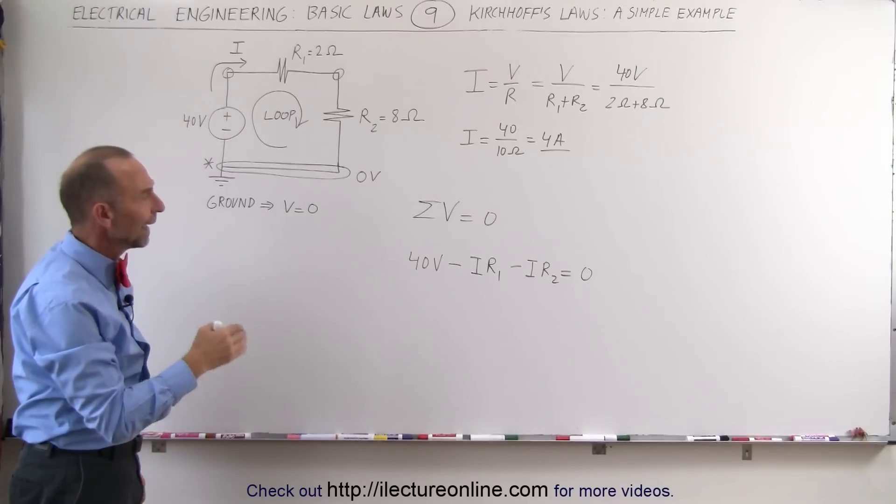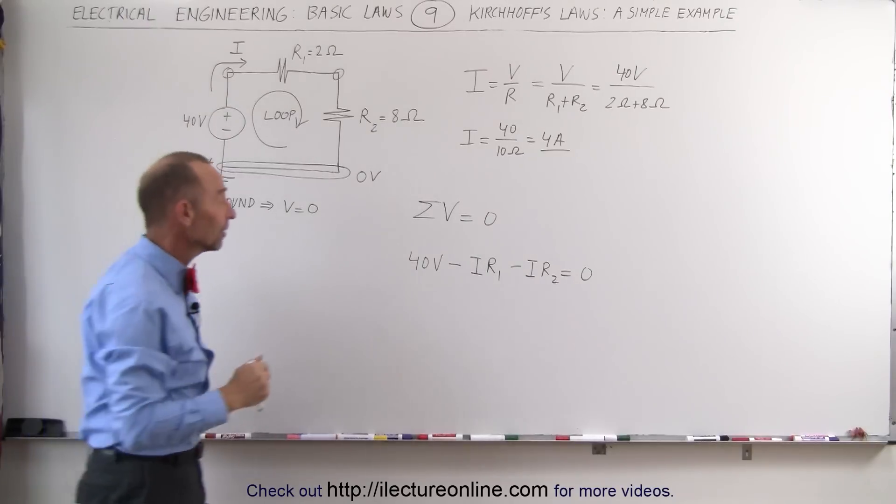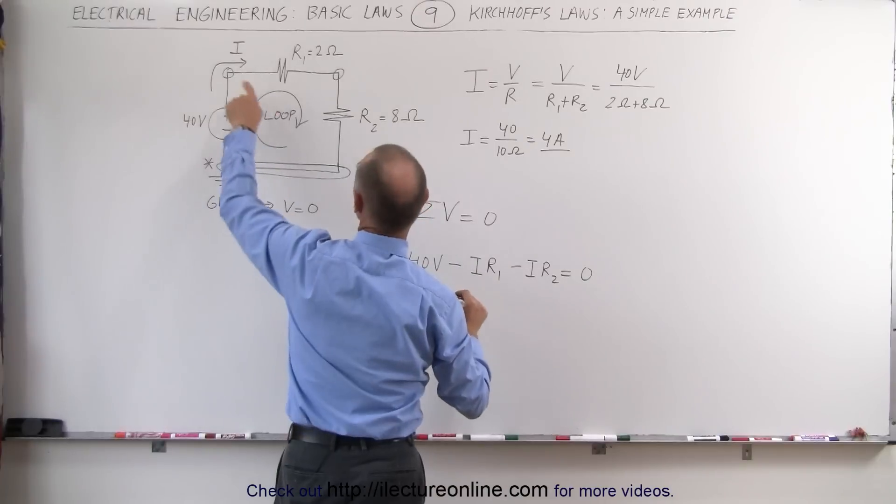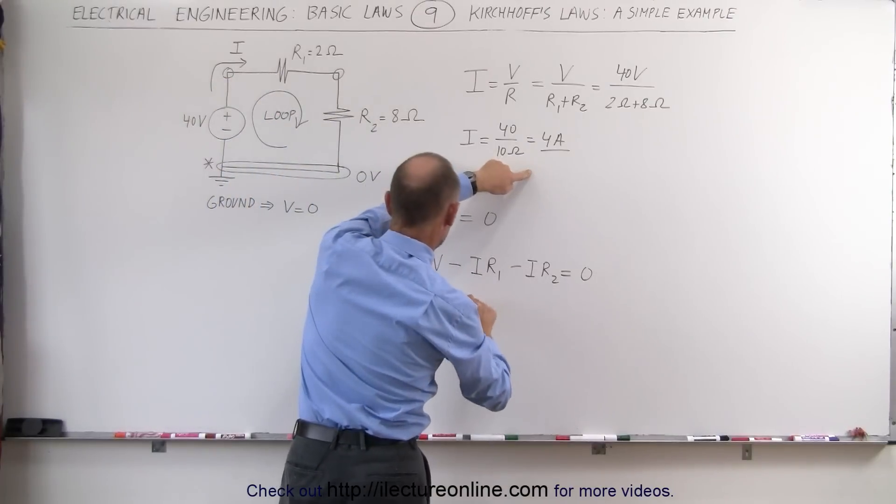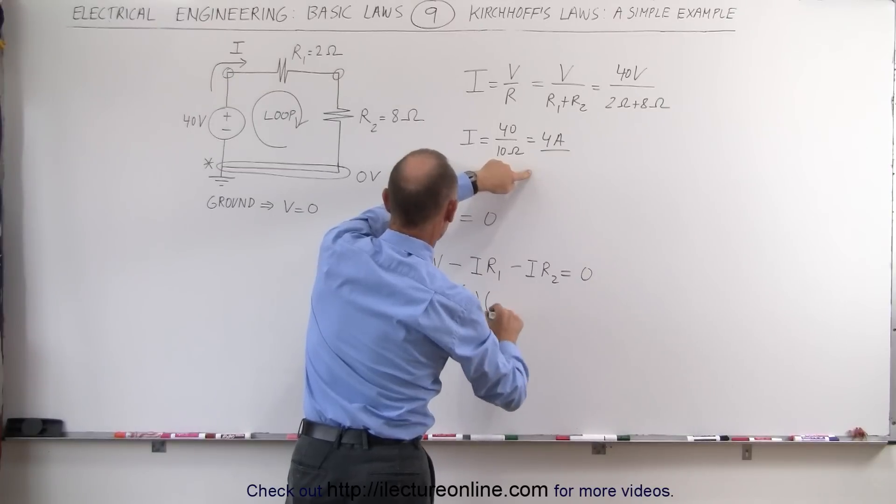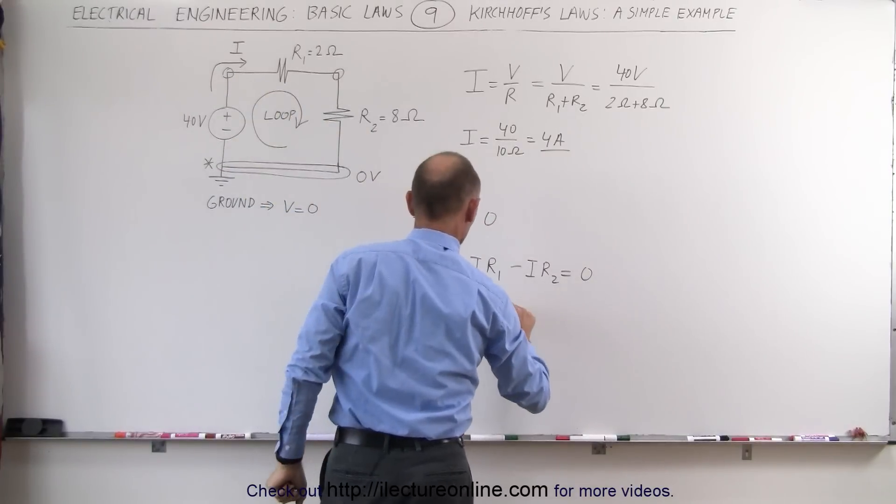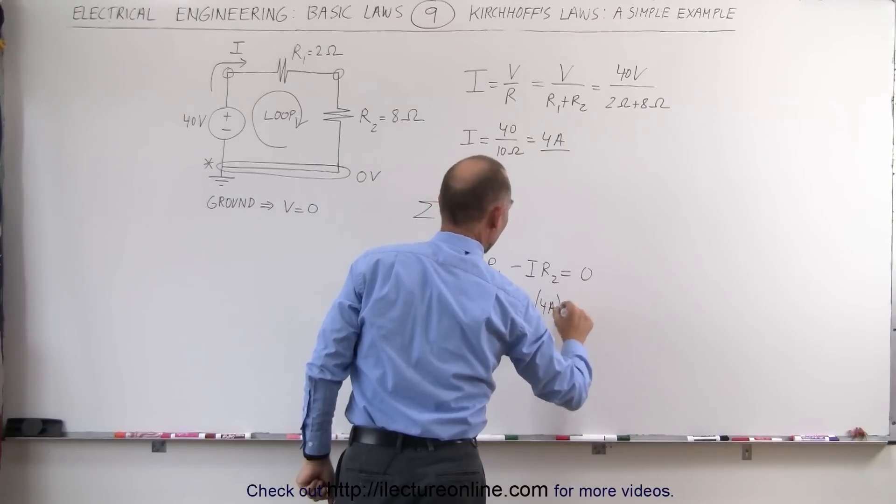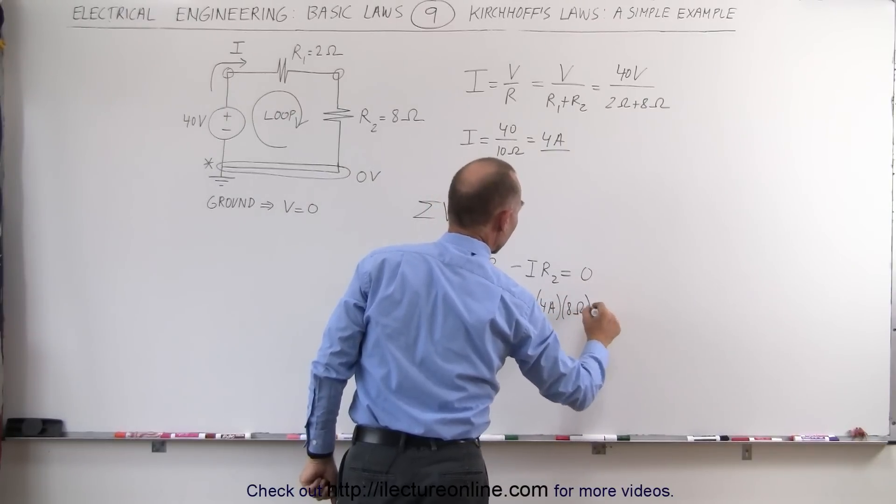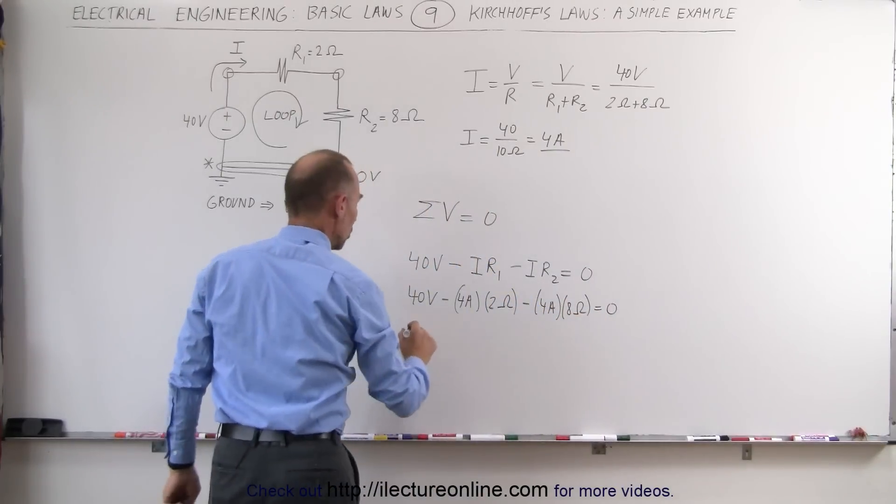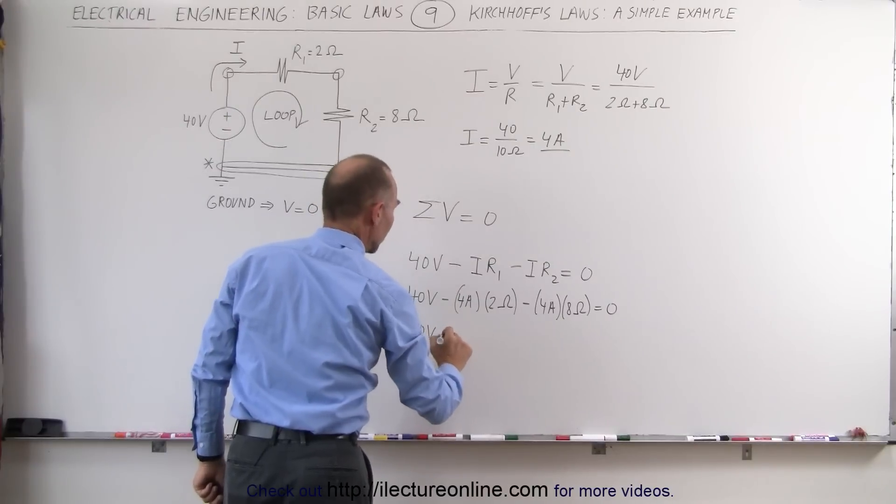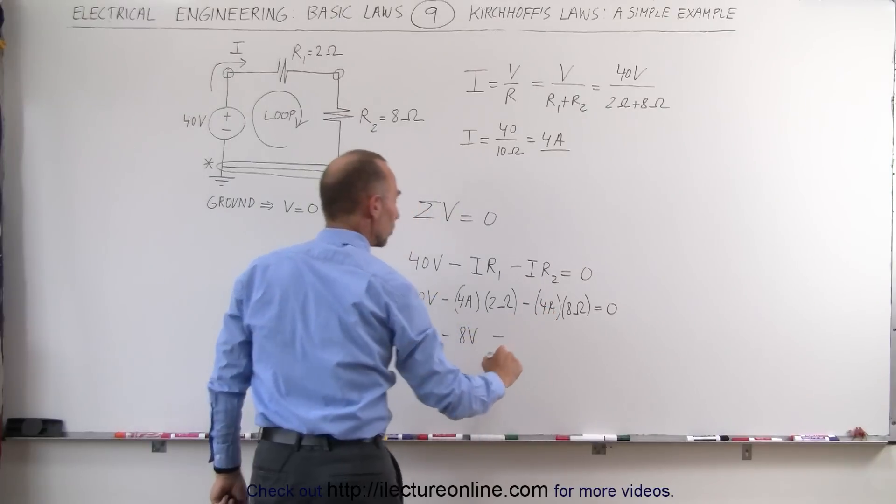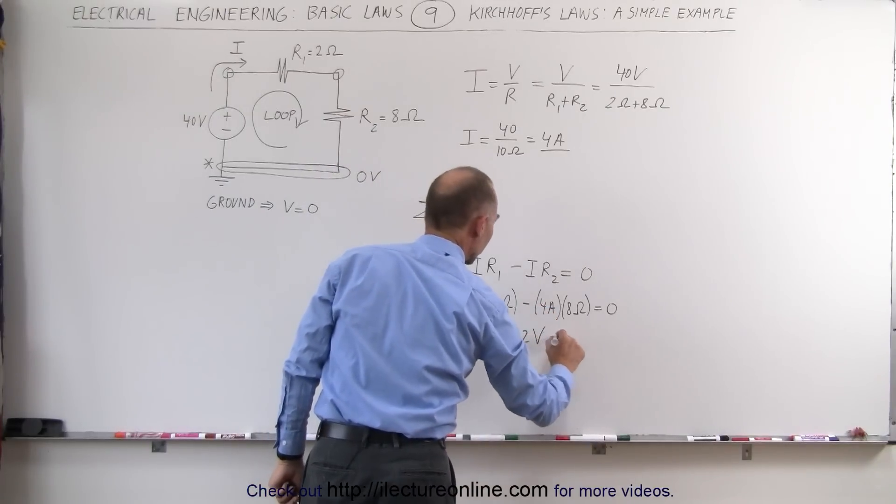Let's put in the current and the resistance to see if we got this correct. 40 volts minus the current, which is 4 amps, times the resistor R1 of 2 ohms, minus the current, 4 amps, times the resistance of 8 ohms, and that should add up to zero. Notice here that the voltage drop across the first resistor was 8 volts, and the voltage drop across the second resistor was 32 volts.